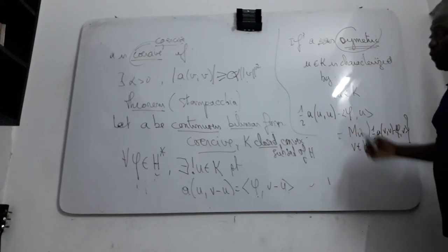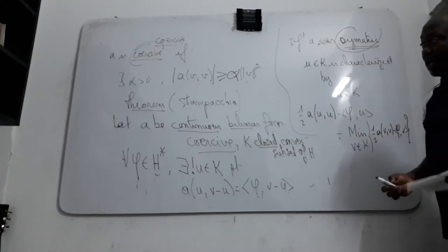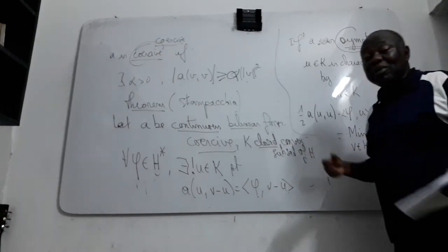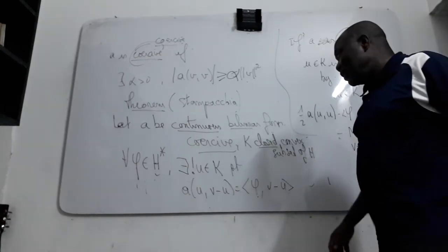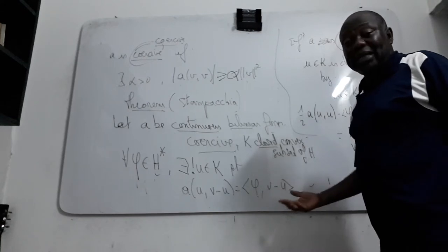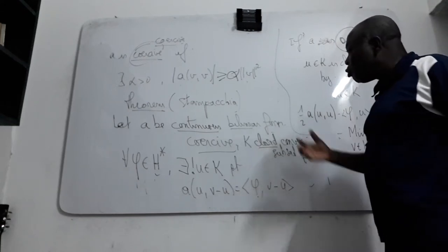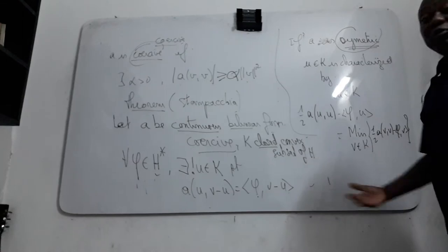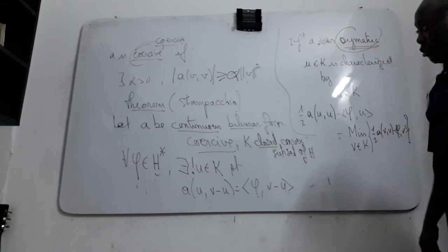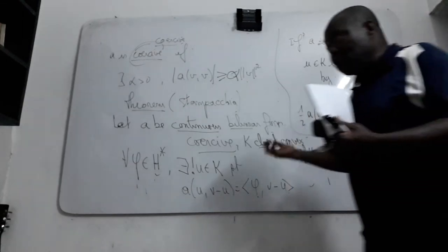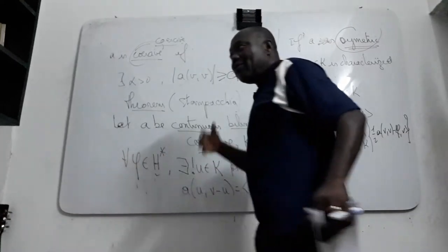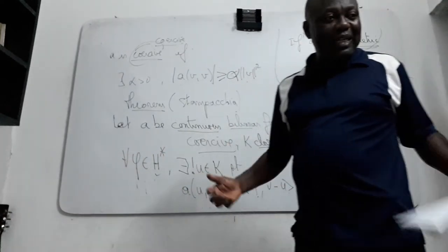I said that this kind of relation is very useful for solving some linear differential equation, like the elliptic linear partial differential equation. You have this kind of property to prove the existence of the solution. Maybe you will come back to study this kind of property.